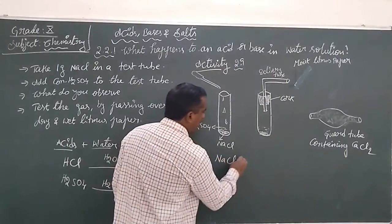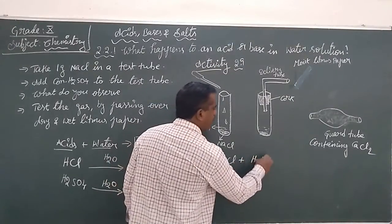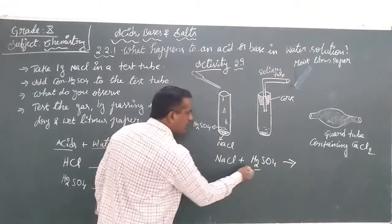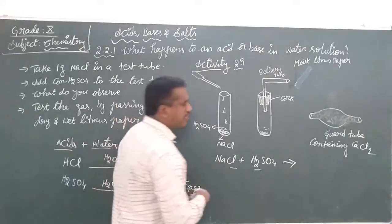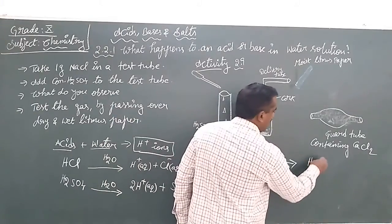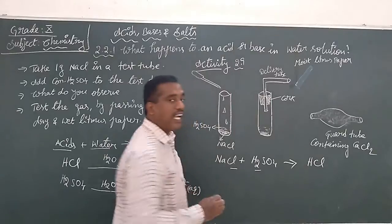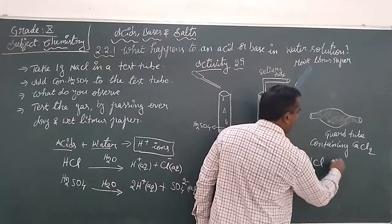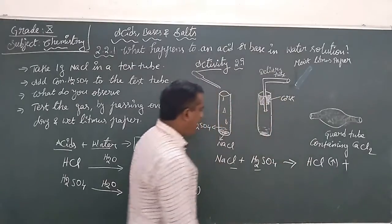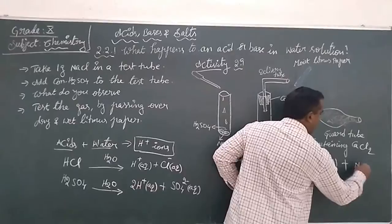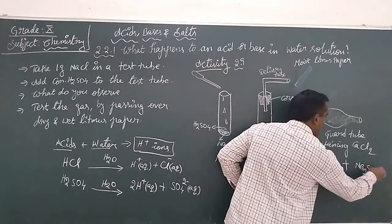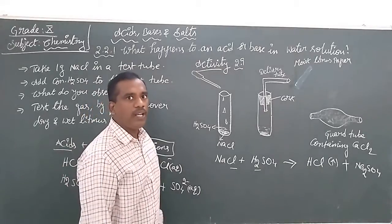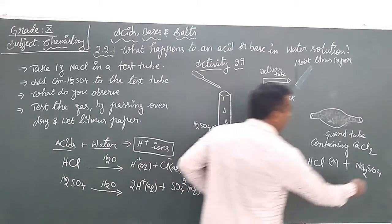The sodium chloride reacts with sulfuric acid. Hydrochloric acid is formed — in which state? Gaseous state. The remaining sodium chloride comes back with sulfate to form sodium sulfate, which will be in the liquid state.